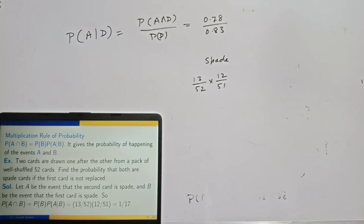So I will continue this discussion in the next lecture. In this lecture you have learned mainly the basic definitions related to probability, and the addition rule, multiplication rule, and axioms of probability. Be prepared with these basics for the next lecture. Thank you.